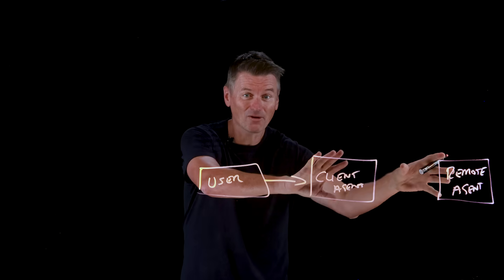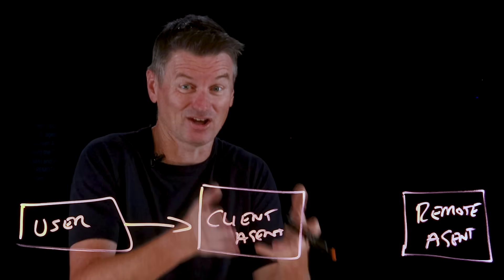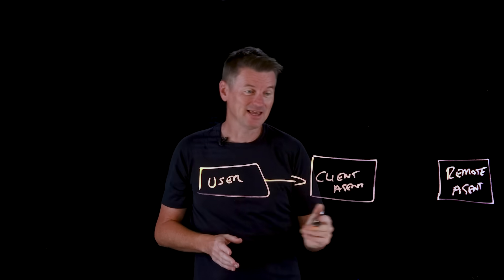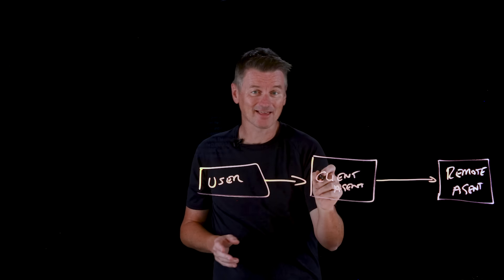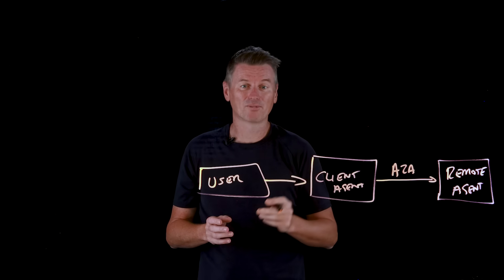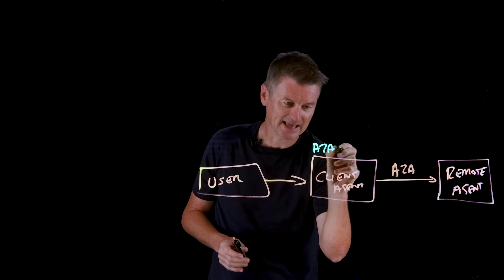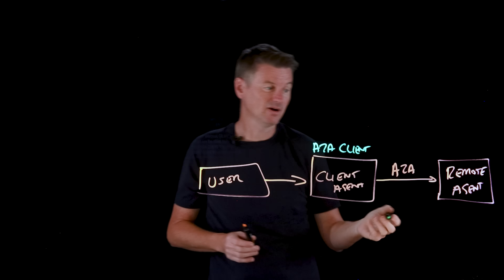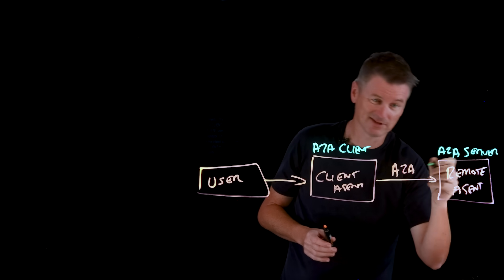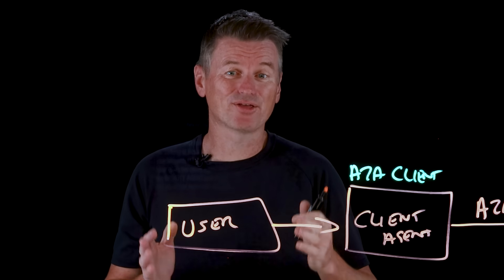Essentially, these are all AI agents. In some scenarios, a given AI agent might be the client agent making the calls, and in other cases it might be the remote agent receiving them. The connection between the client agent and the remote agent uses the A2A protocol. You might also see the client agent referred to as the A2A client and the remote agent referred to as the A2A server — it just means the same thing.